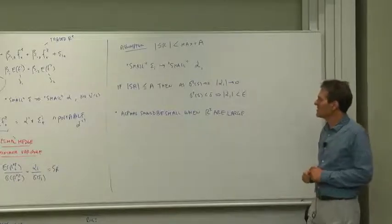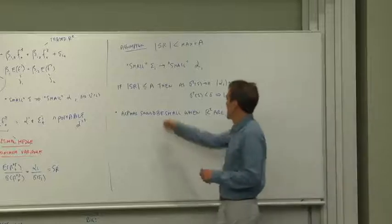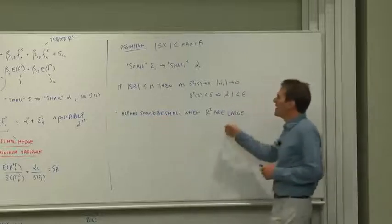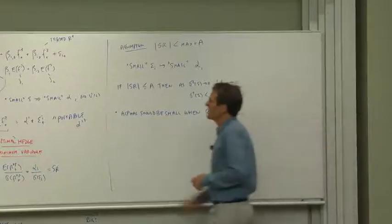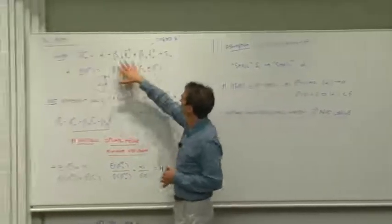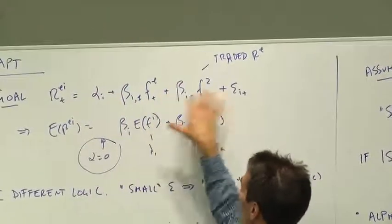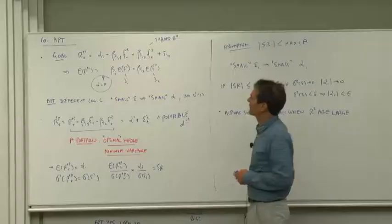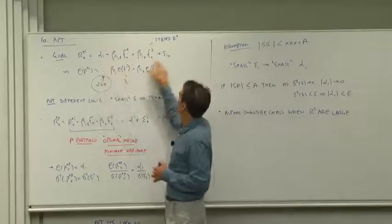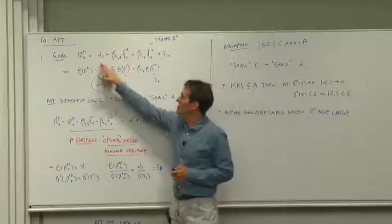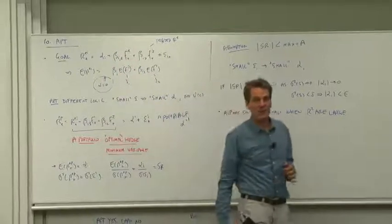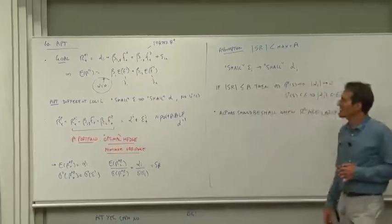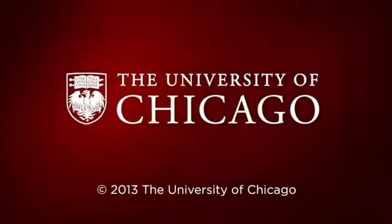So the prediction of the APT is that alphas should be small where the R squareds are large. If you can find factors that explain a lot of the return on your test assets, then in those cases the errors are small, the R squareds are large, and the alphas should be small numbers. A different way of getting to a factor pricing model.